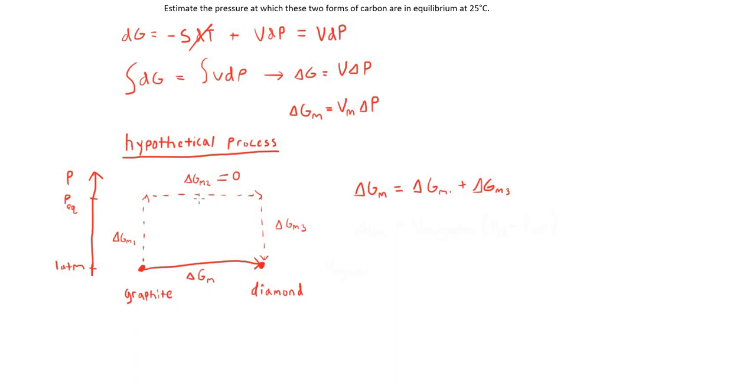The change in molar Gibbs free energy of step 2 is going to equal zero, because at the equilibrium pressure, the Gibbs free energy of graphite equals the Gibbs free energy of diamond. So the total change in Gibbs free energy of the process is going to equal ΔG_m1 plus ΔG_m3.